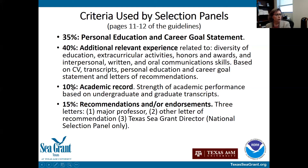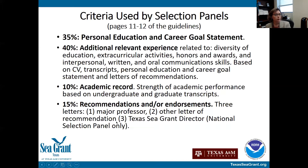Ten percent of the weighted criteria will look at your academic record — the strength of your performance based on both undergraduate and graduate transcripts — and whether it makes sense relative to where you are in your educational career stage. Then 15% is weighted on recommendations and endorsement letters, including your major professor, faculty advisor, one other letter of recommendation, and the Texas Sea Grant director's letter, which the national panel will also review.